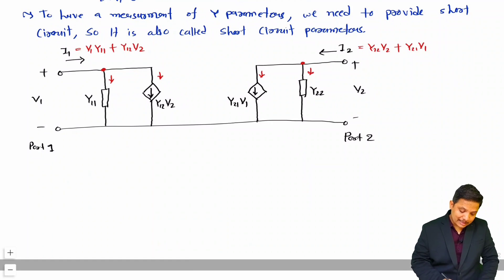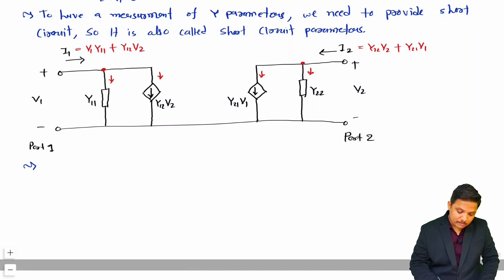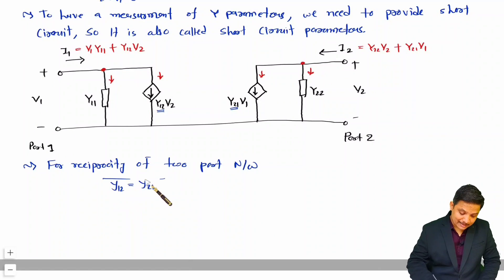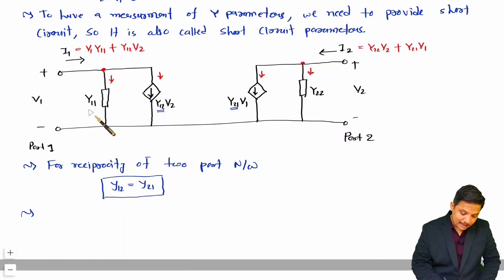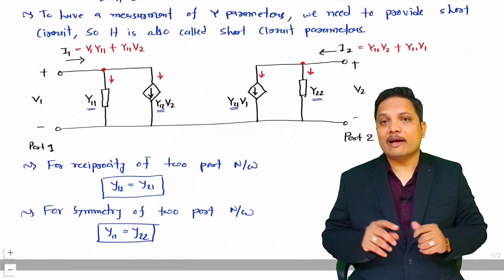Now for the two essential properties of Y parameter: for reciprocity, Y12 must equal Y21. For symmetricity, Y11 must equal Y22. These are the basics you must know regarding Y parameter.